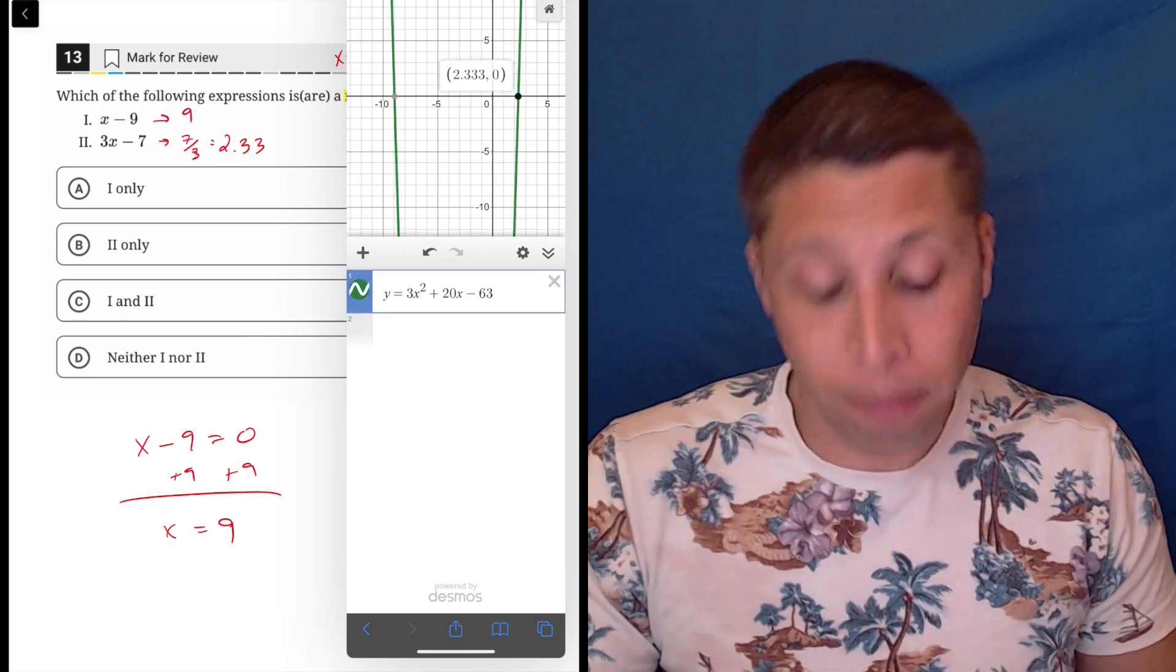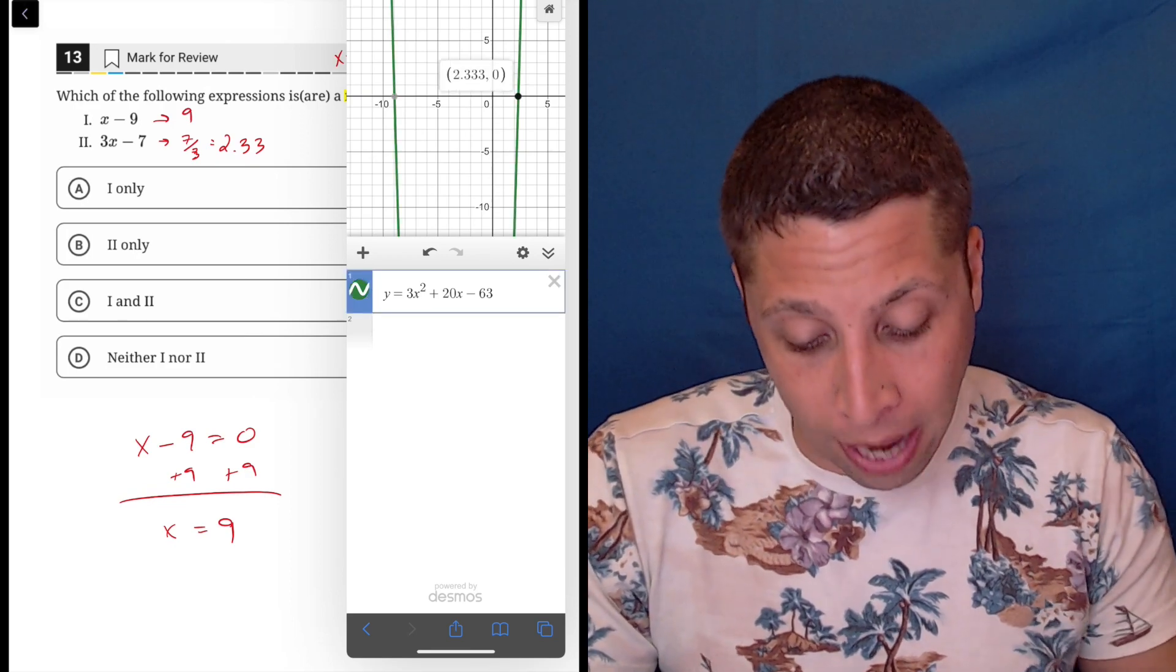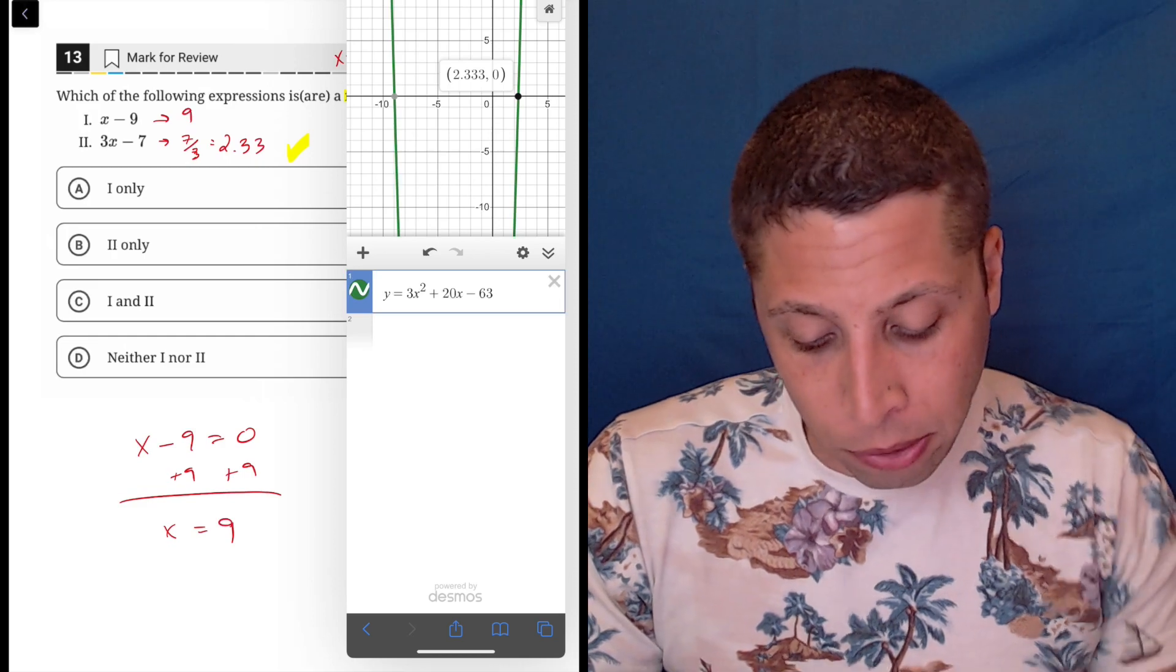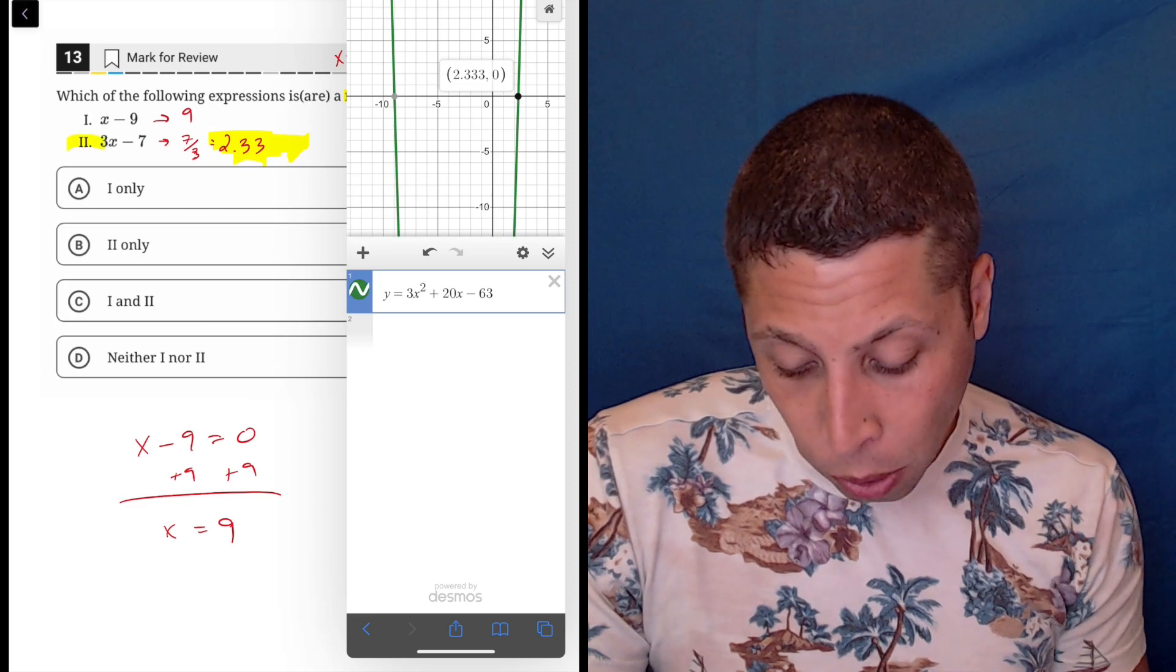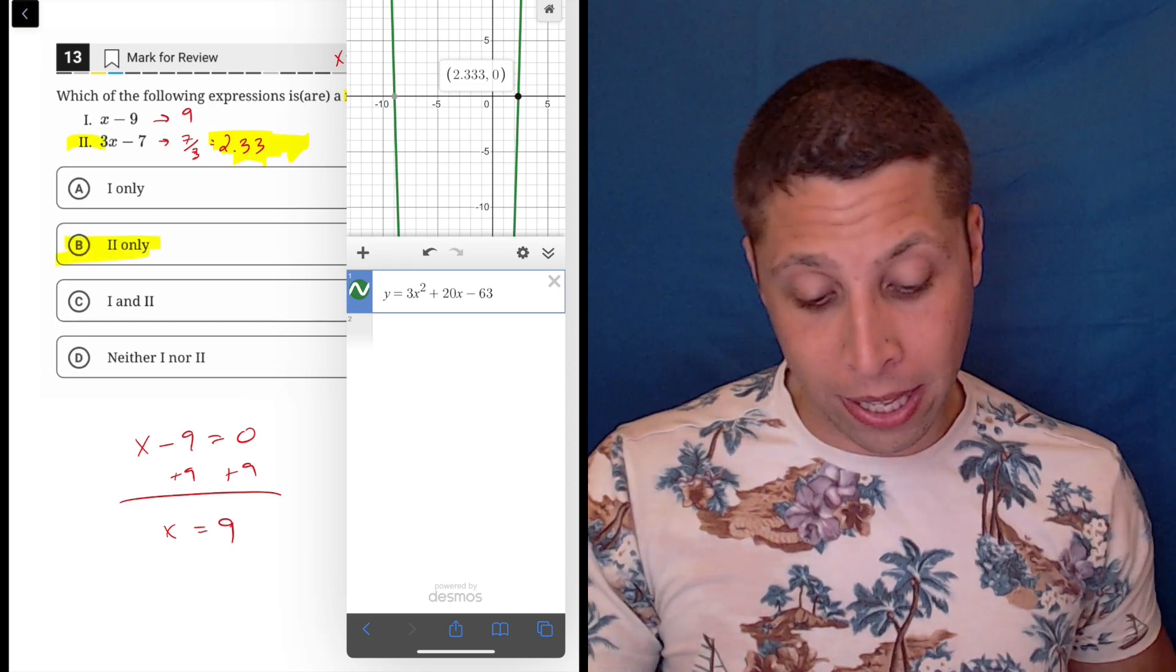So what's this other one? Well, 2.33. So that checks out. So there we go. That's the one I was looking for that was a little bit more annoying, but it does check out. So that's Roman numeral 2, and so choice B would be the answer.